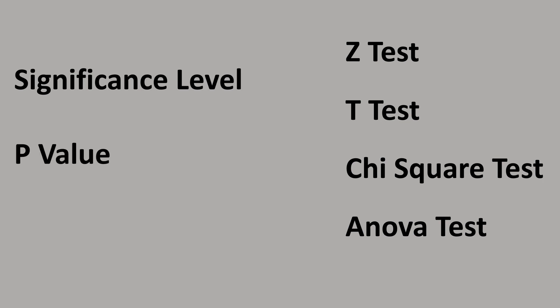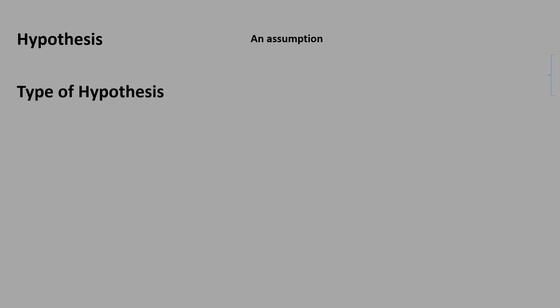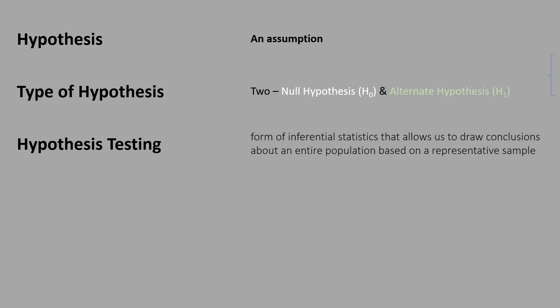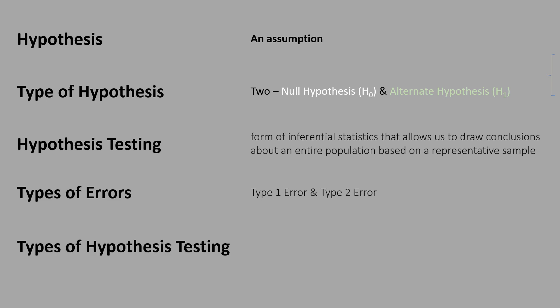There are many types of hypothesis tests. The ones we will be covering are the Z-test, T-test, Chi-square test, and ANOVA test. Before jumping to the tests, it is important to understand significance level and p-value, which we will cover in upcoming videos. Quick recap: we discussed what hypothesis is — just an assumption — types of hypothesis, hypothesis testing, types of errors, and the types of hypothesis tests we'll be covering in this series. Happy learning!